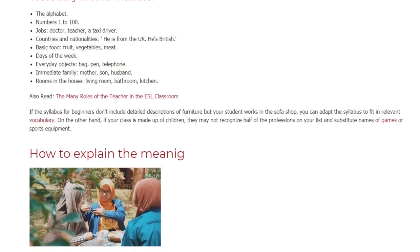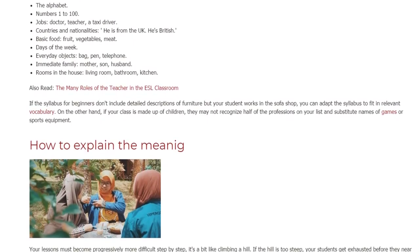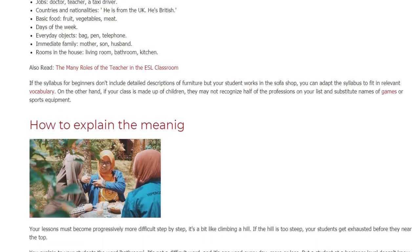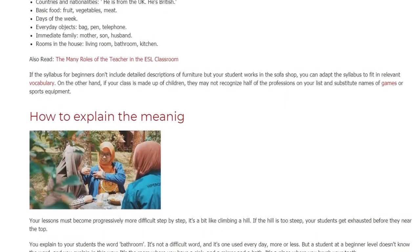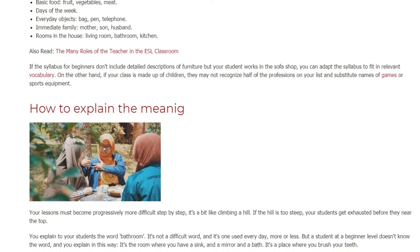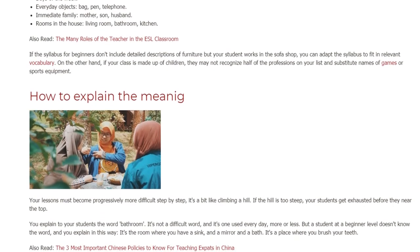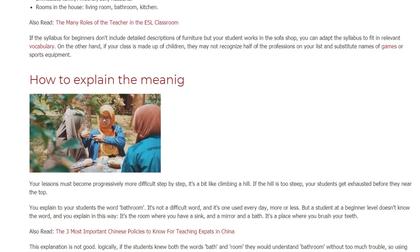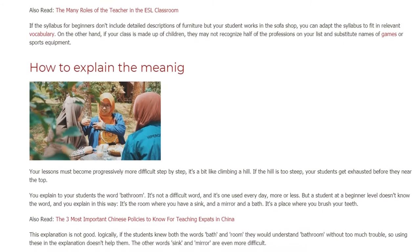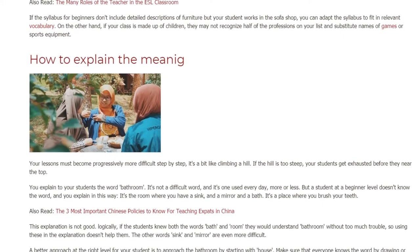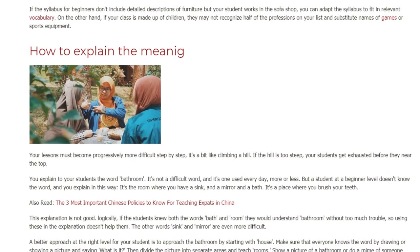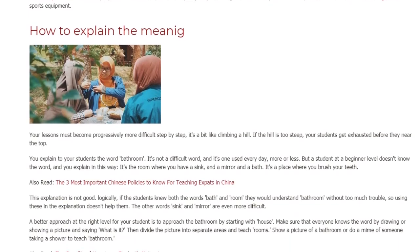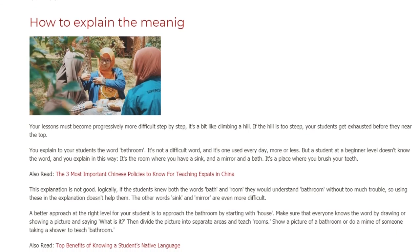How to explain the meaning to your students: your lessons must become progressively more difficult, step by step. It's a bit like climbing a hill — if the hill is too steep, your students get exhausted before they near the top. For example, you explain the word 'bathroom' to your students. It's not a difficult word and it's one used every day. But a student at beginner level doesn't know the word, and if you explain it this way — 'it's the room where you have a sink, a mirror, and a bath; it's a place where you brush your teeth' — this is not a good explanation.